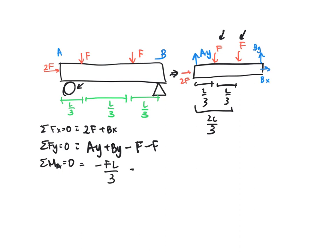So we're going to have it be negative 2FL over 3. And the last one is going to be going out of the page, so positive, and it's going to just be BL.